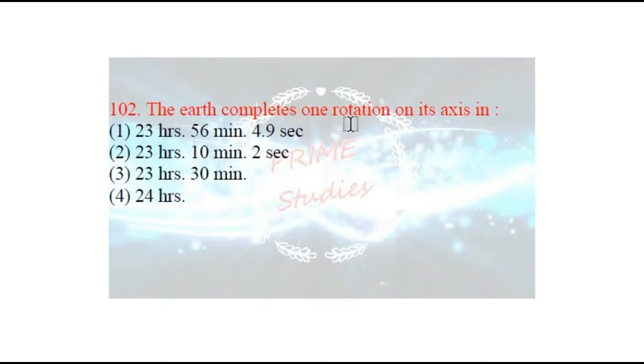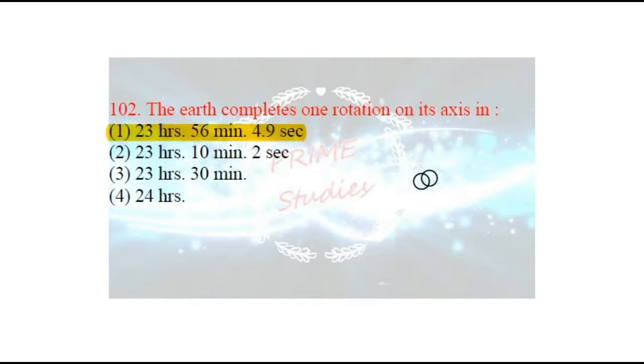Next question: the earth completes one rotation on its axis in how much time? Jo earth hai, woh apne axis ke upar ek chakkar kitnay samay mein lagati hai? The answer is 23 hours, 56 minutes, and 4.09 seconds.